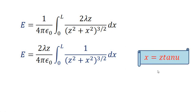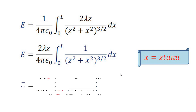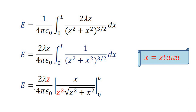This integral can be evaluated using a tan substitution — substitute x = z tan u. After performing the integration, we get the result: (2 lambda z / 4 pi epsilon_0) times [x / (z² sqrt(z² + x²))] evaluated from 0 to L. Please try to do this integration; if you have any problem, see the video description for more details.